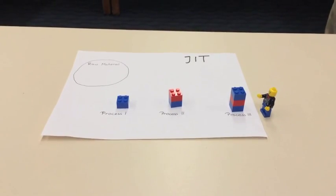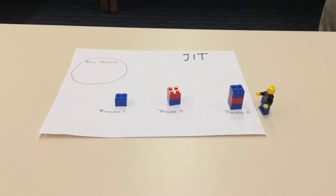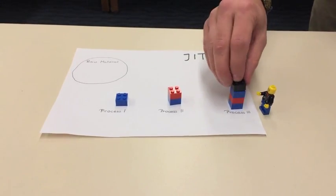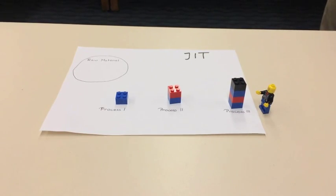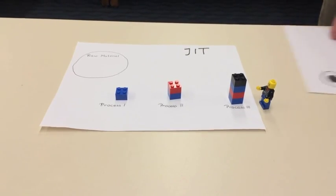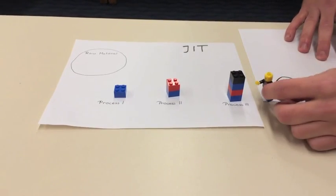This means the manufacturing process is stopped as soon as a defect is detected. Let's say, for example, a worker in process 3 detects that the product contains a black brick instead of a yellow brick. This worker would push a button which stops the production process immediately.